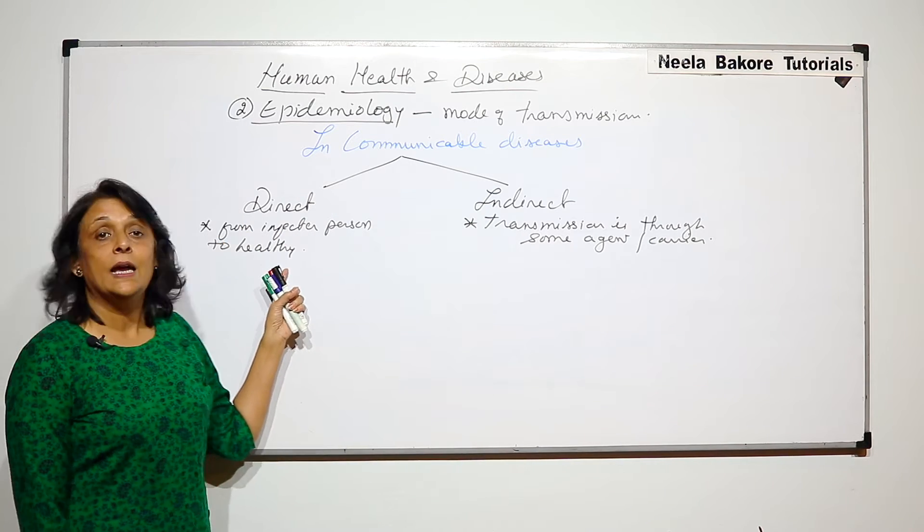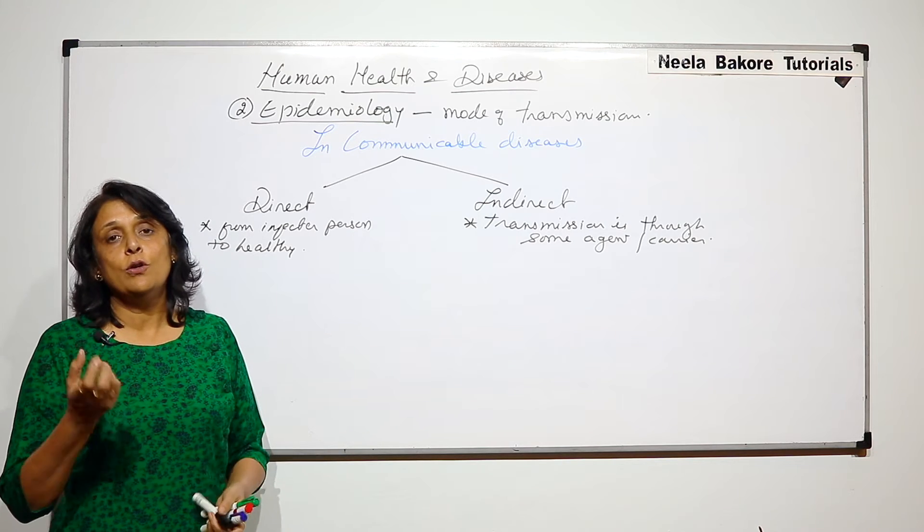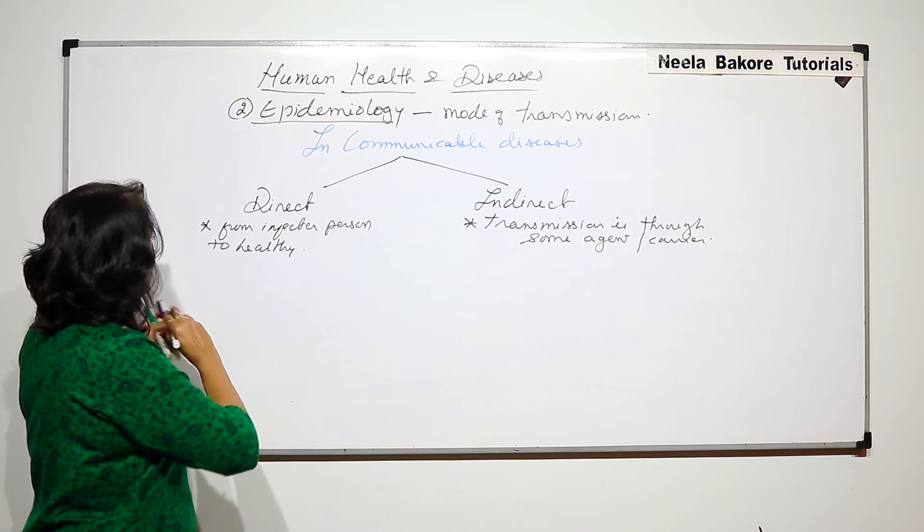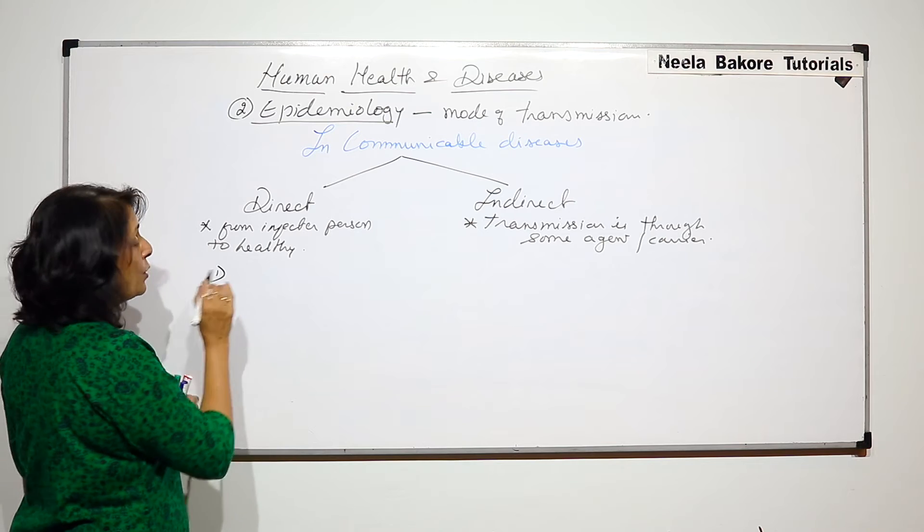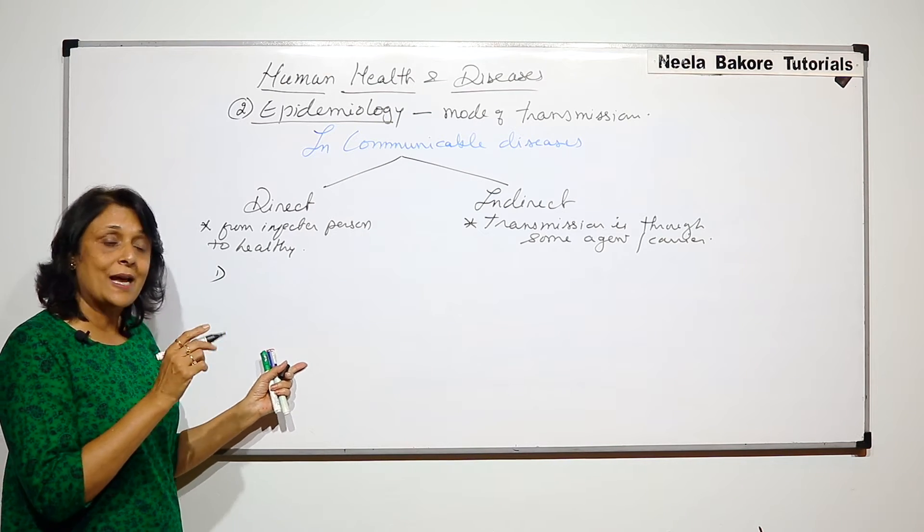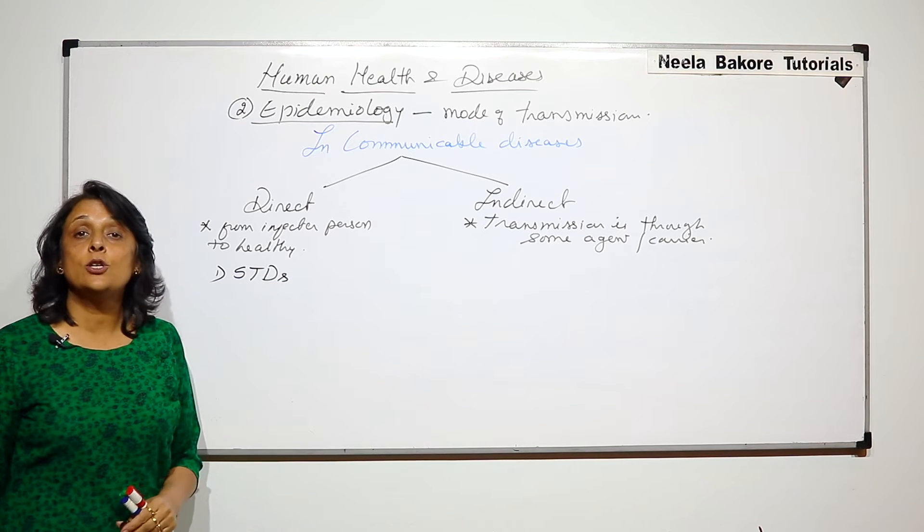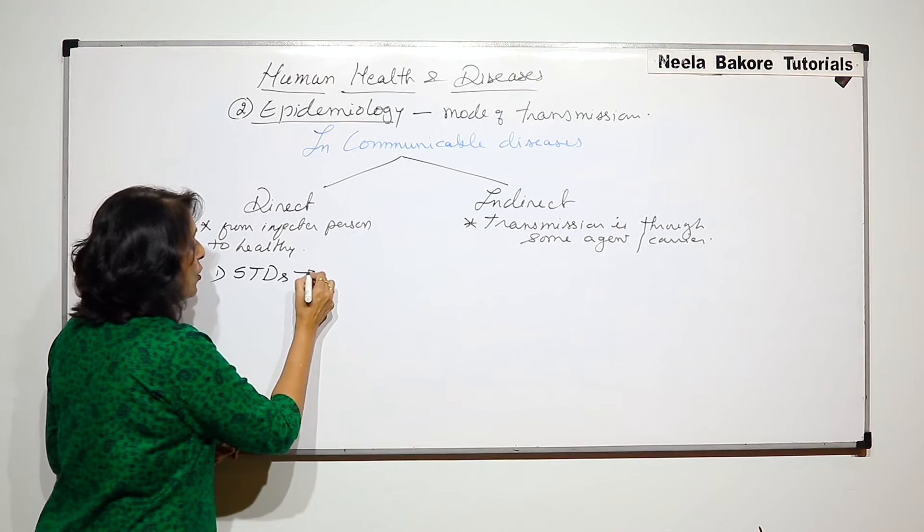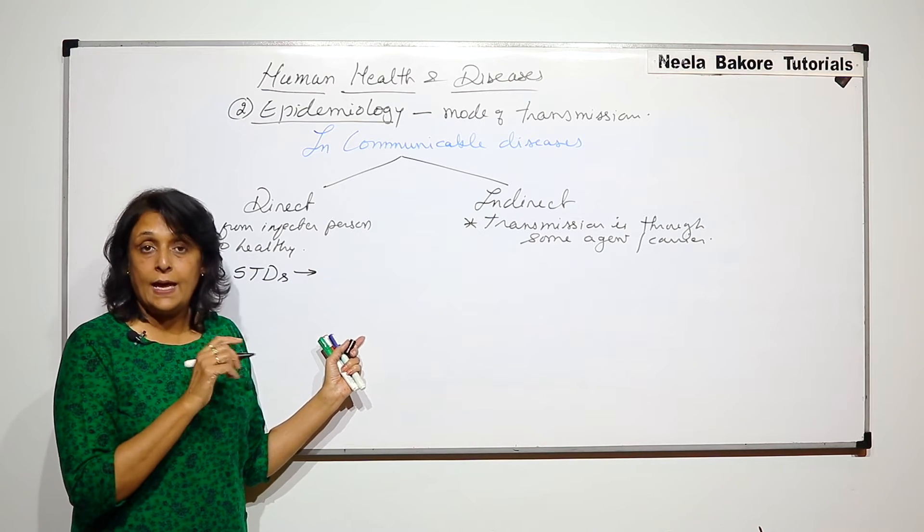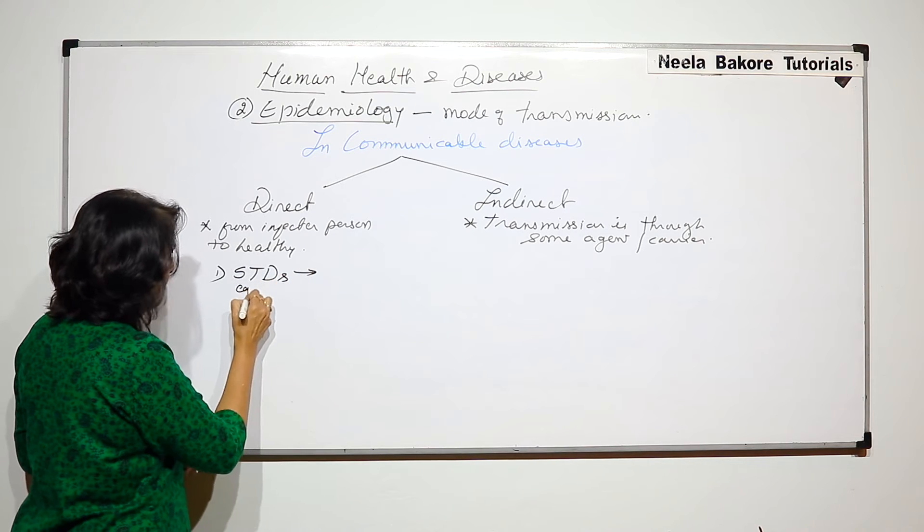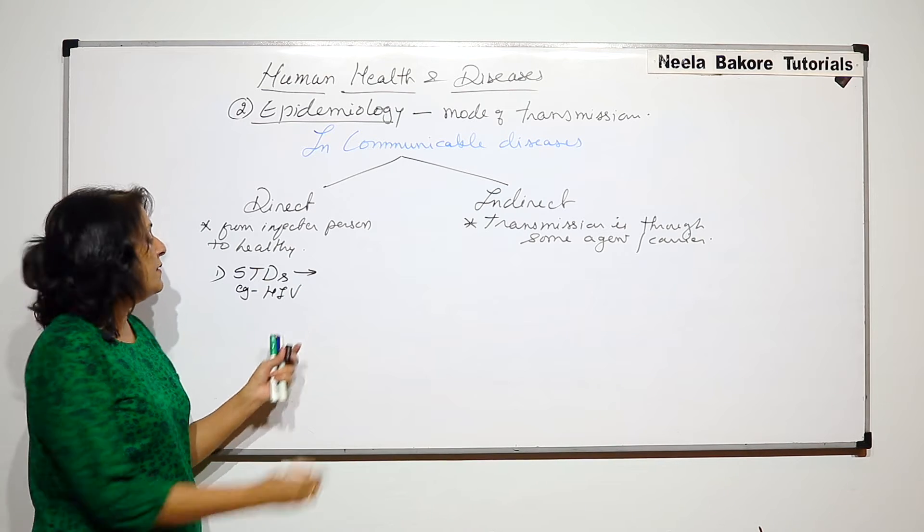But here it is through direct contact or through direct transmission. We don't depend on the agents. Now when we are talking about direct, one important example of those diseases which are directly transmitted are STDs, that is sexually transmitted disease. So if one person is infected and has any of those, let us write down some examples here. HIV, caused by HIV that is AIDS,